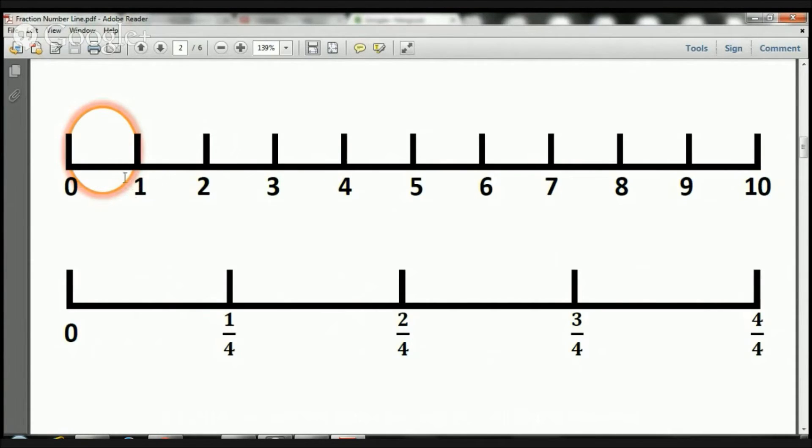See? Zero to one up here. Right there. Zero to one. Zero to one. Same thing. Right there. Zero to one. Remember, four over four equals one. And let me just go over a couple things with you again. The numbers on top is called the numerator. The number on the bottom is called the denominator.